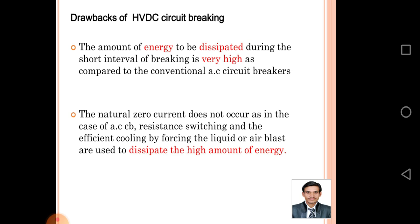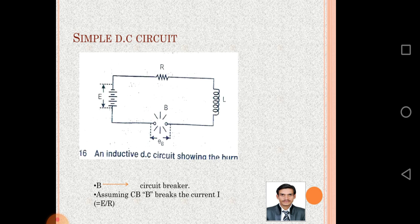The natural zero current does not occur as in the case of AC circuit breakers. Resistance switching and efficient cooling by forcing liquid or air blast are used to dissipate the high amount of energy. This is a simple DC circuit — R is resistance, L is inductance, E is a battery.